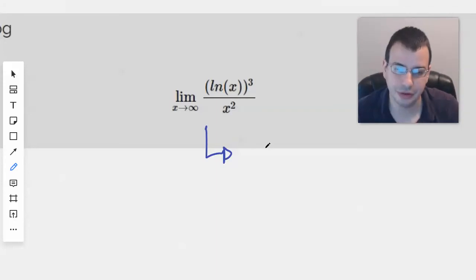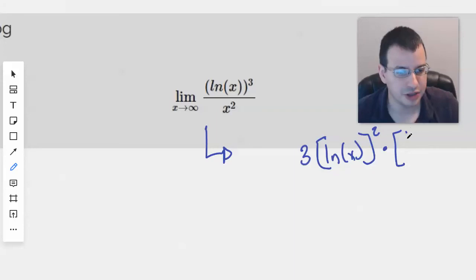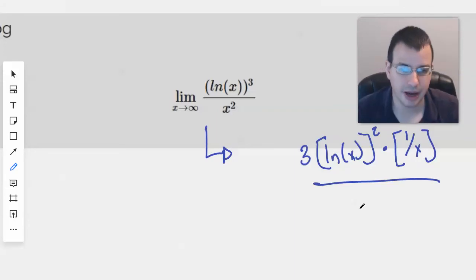We're going to take the limit of natural log of x cubed. To do that, we will do the chain rule. So it will be 3 natural log of x quantity squared times the derivative of natural log of x, which is 1 over x, divided by the derivative of x squared, which is 2x.